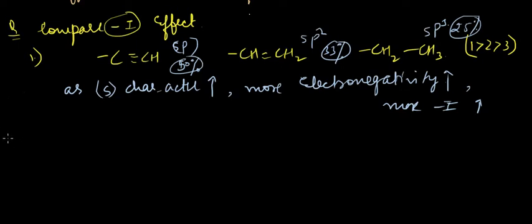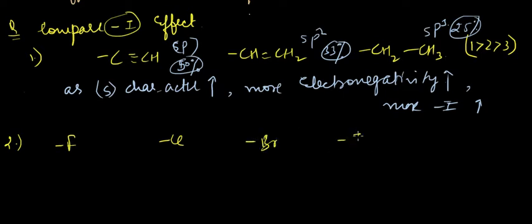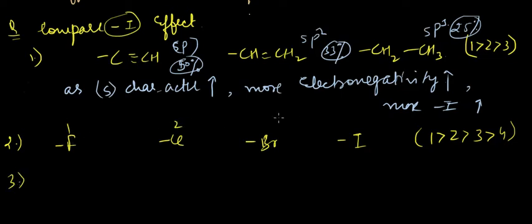Let us look at the next example — we need to compare electronegativity among these atoms. The order would be: one, two, three, four — where this is the first, this is the second, this is the third, and this is the fourth.